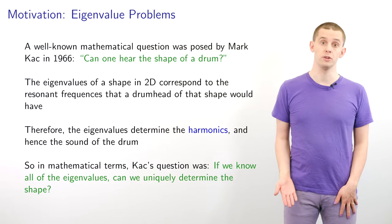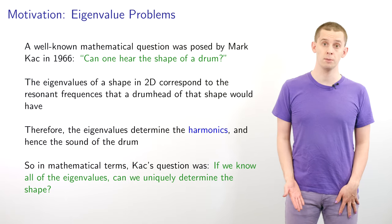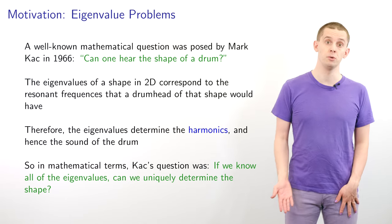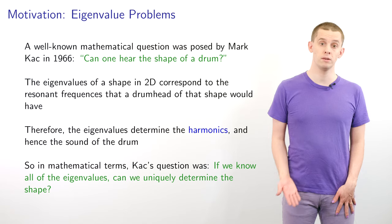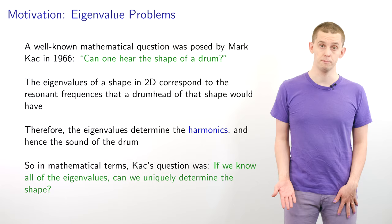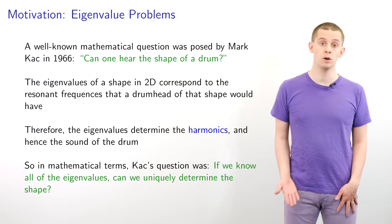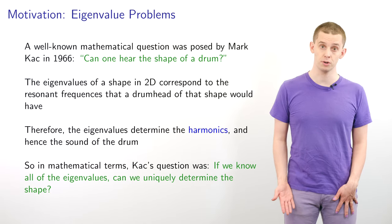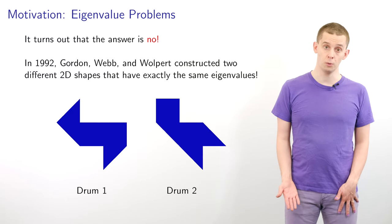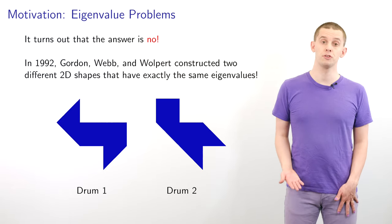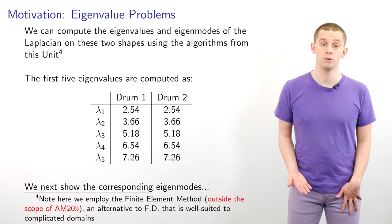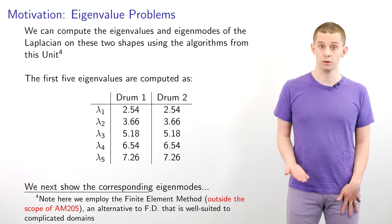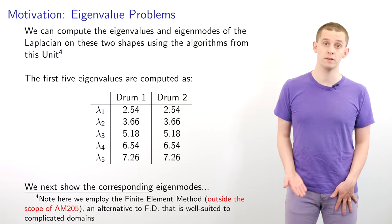A well-known mathematical question posed by Mark Kac in 1966 is: can one hear the shape of a drum? The eigenvalues of a shape in 2D correspond to the resonant frequencies that the drum would oscillate at, and therefore the eigenvalues determine the harmonics — essentially the sound we would hear from the drum. In mathematical terms, Kac's question is: if we know all of the eigenvalues, can we uniquely determine the shape of the drum? It turns out that the answer is no. In 1992, Gordon, Webb, and Wolpert constructed two different 2D shapes that have exactly the same eigenvalues, and the first five eigenvalues for the two drums exactly agree.